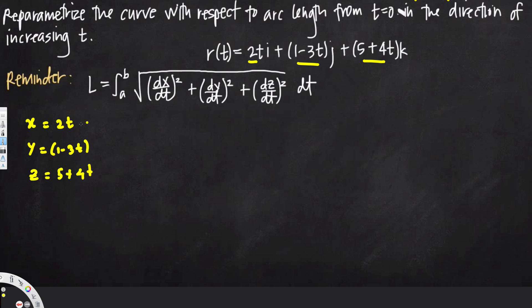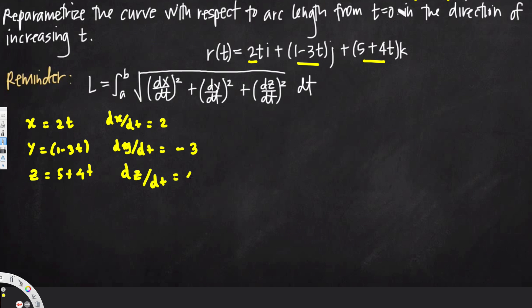Now let's take the derivative of each component with respect to t. dx/dt is equal to 2, dy/dt is equal to negative 3, and dz/dt is equal to 4.